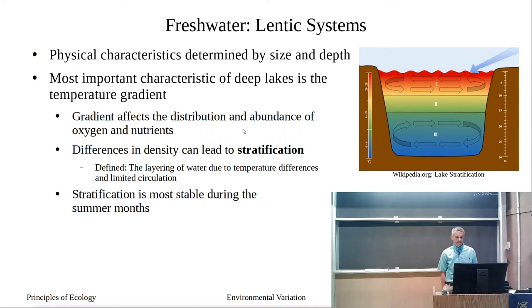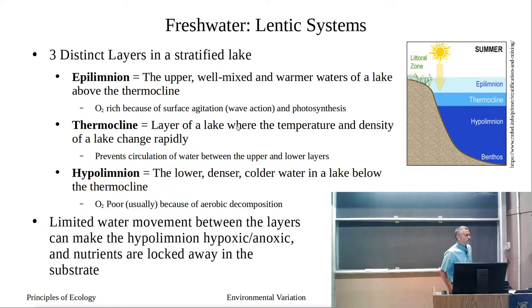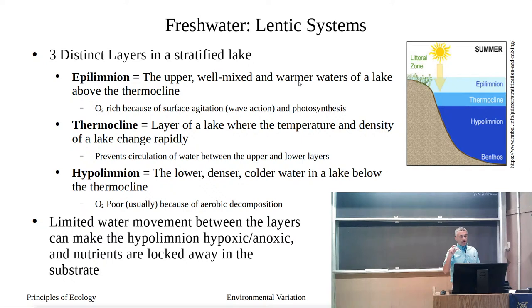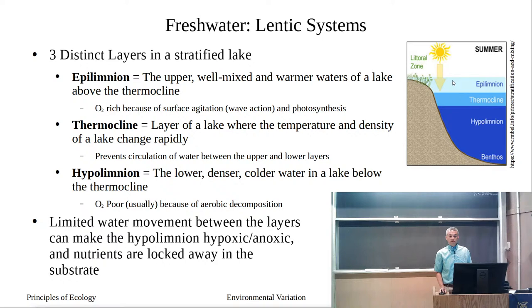In our lake, we have three distinct layers: the epilimnion, the hypolimnion, and the thermocline. The epilimnion — 'epi' meaning on top — is the upper, well-mixed, warmer water above the thermocline. This area has surface agitation and circulation, and oxygen is being dissolved into that surface area, so we have an oxygen-rich region because of that agitation.